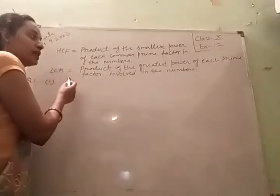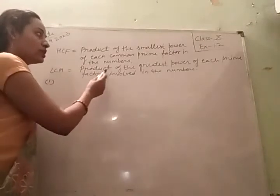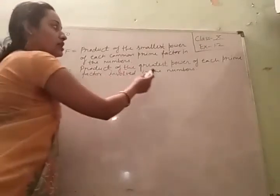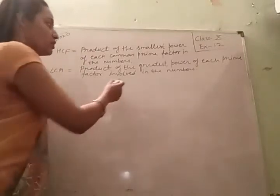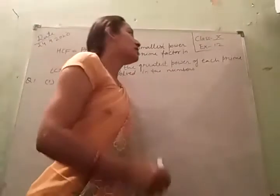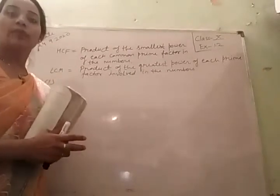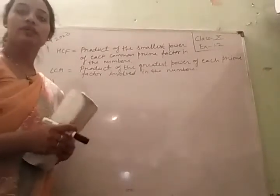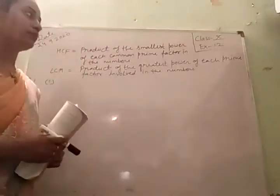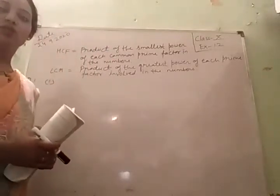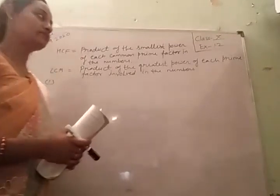Second is LCM — what is LCM? It is the product of the greatest power of each prime factor involved in the numbers. First, prime numbers — which numbers are prime? Those which are not divisible by any number other than themselves. 2 is the smallest even prime number. Prime numbers are 2, 3, 5, 7, and so on up to infinite.